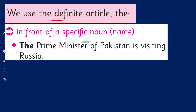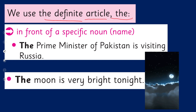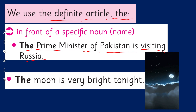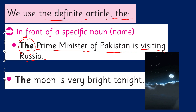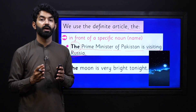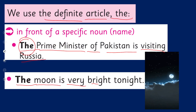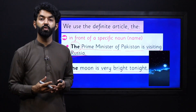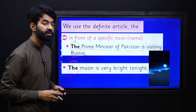We also use the definite article 'the' in front of a specific name or noun. For example, 'The prime minister of Pakistan is visiting Russia' — we are talking not about anyone but about a specific person or specific noun. We use 'the' because there is only one prime minister at that time. 'The moon is very bright tonight' — we are talking about the moon, which is a specific thing; it is only one. That's why we use this definite article 'the'.